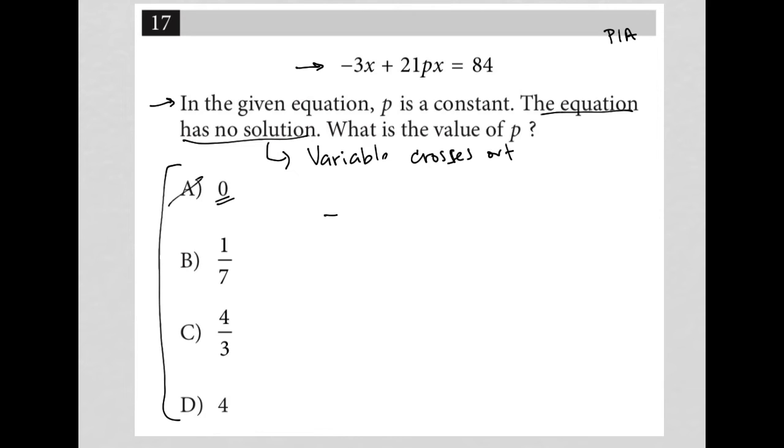For choice B, that means I have negative 3x plus 21 times 1/7 x equals 84. And then, negative 3x, 21 times 1 over 7 is, treat that like 21 over 1. This cross cancels, so it becomes 3 and 1. This becomes plus 3x equals 84. And what do you know?